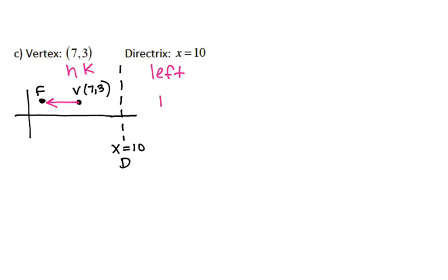The last thing I need to do is figure out what p is. p is the distance from my vertex to my directrix. I don't know where my focus is, but I know where my directrix is. I'm going from an x of 7 to an x of 10 — that's 3 units. Since my parabola is opening to the left, I have to make that p negative. So anytime your parabola is opening to the left or down, you make p negative. Since it's opening to the left, my y is going to be squared.